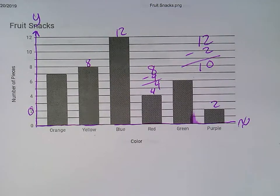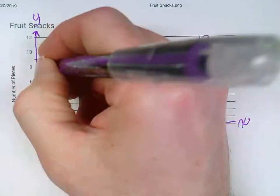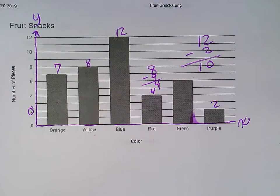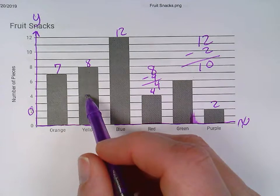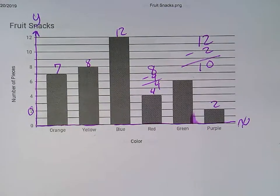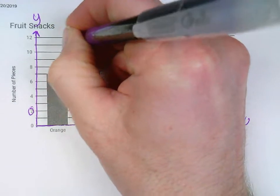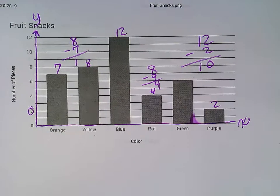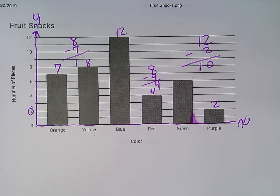Another thing that also involves subtracting is figuring out the difference. What is the difference between how many yellow ones were found and how many orange ones were found? So once again, to get the difference, anytime we're asked to find the difference, we're also going to subtract. So there was 8 yellow ones and 7 orange ones. To figure out the difference, I'm going to do 8 minus 7, and that will give me 1. So the difference in how many yellow ones were found and how many orange ones were found was 1 fruit snack.